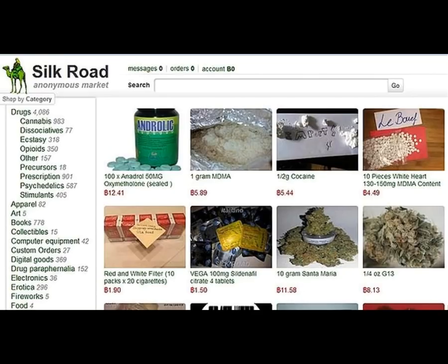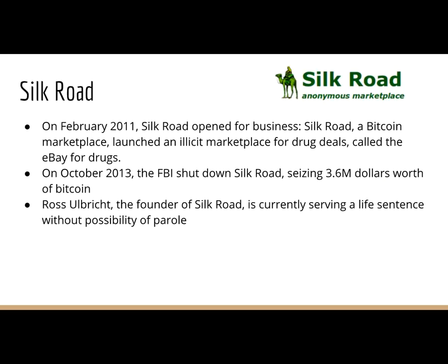The other Bitcoin scandal was Silk Road — the website where you could buy cocaine, weed, and assorted goods. In February 2011, Silk Road opened for business selling all sorts of drugs on the black market, also known as the eBay for drugs. In October 2013, the FBI shut down Silk Road, seizing $3.6 million worth of Bitcoin. Ross Ulbricht, the founder of Silk Road, is currently serving a life sentence without possibility of parole. The lesson here: Bitcoin was extremely scandalous, and its name is still tinged with scandal even today. Number two: you should not sell drugs.